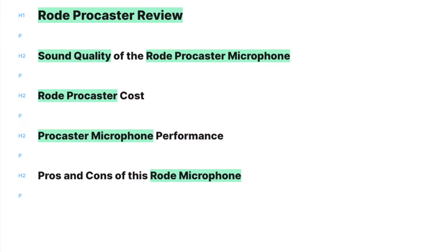I've done that for the benefit of search engines, making it easier for them to connect these subheadings. If I was writing strictly for humans, this step wouldn't really be necessary — I could just stick to the original subheadings of sound quality, cost, performance, pros and cons. But since we are writing for humans as well, I don't want to repeat 'Rode Procaster' in each subheading, so instead I've used some related terms from the topic model, and they are the ones highlighted in green.